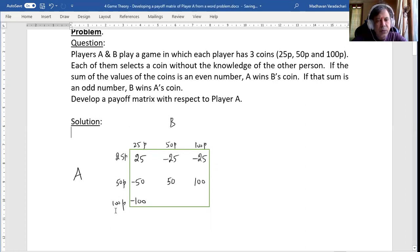Here, 100 plus 50, it is 150. 150 is an even number. Even number means A will win B's coin. B's coin is 50, that A will get it. 50 paise he will obtain. The last one, 100 and 100, it is 200. 200 is an even number. Even number means A wins B's coin. So 100, A will get it.